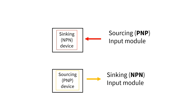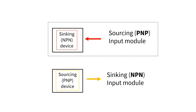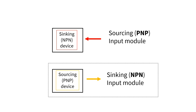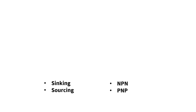Simply like a puzzle, you have two options: either a sourcing connected to a sinking, and vice versa. You cannot have two sourcing or two sinking parts.